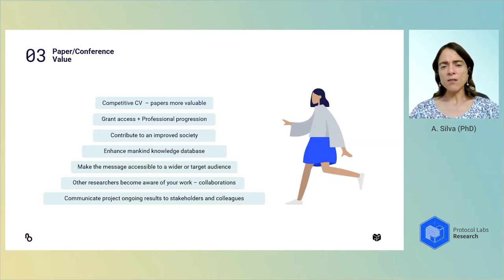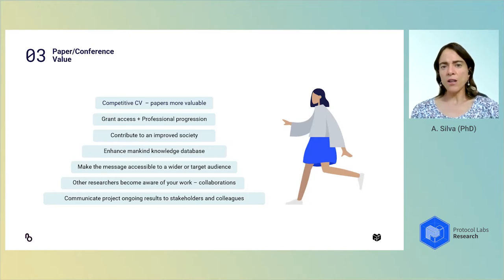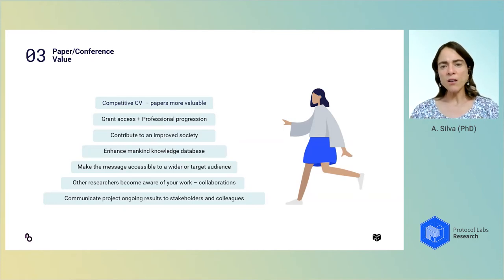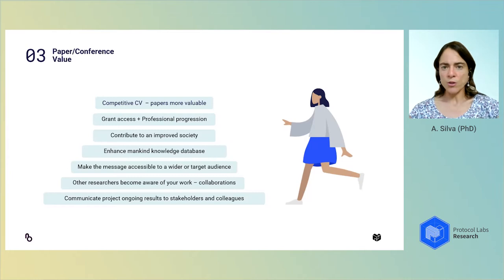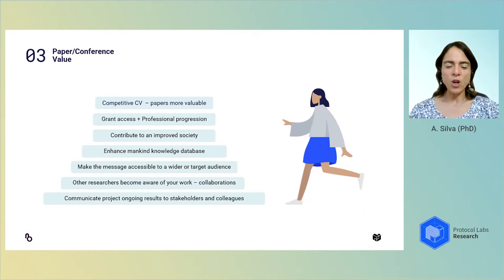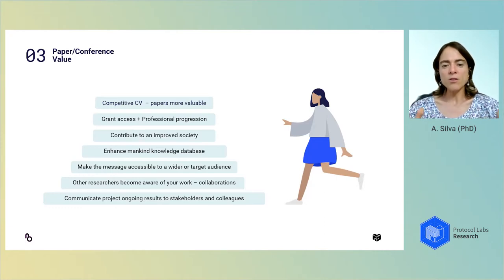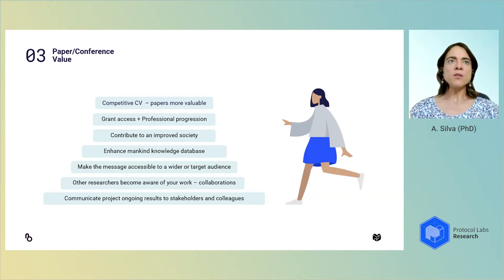Conferences also give you grant access and professional progression. The more you go to conferences, the better your chances of getting collaborations and participating in projects. As you accumulate papers, conference attendance, and even funding via grant access, all of those are metrics widely used to evaluate your career progression. By sharing your results in a visible way in the right channels, you're contributing to an improved society and increasing our overall knowledge. The main difference between papers and conferences is that papers get published in specialized and general journals with different target audiences.